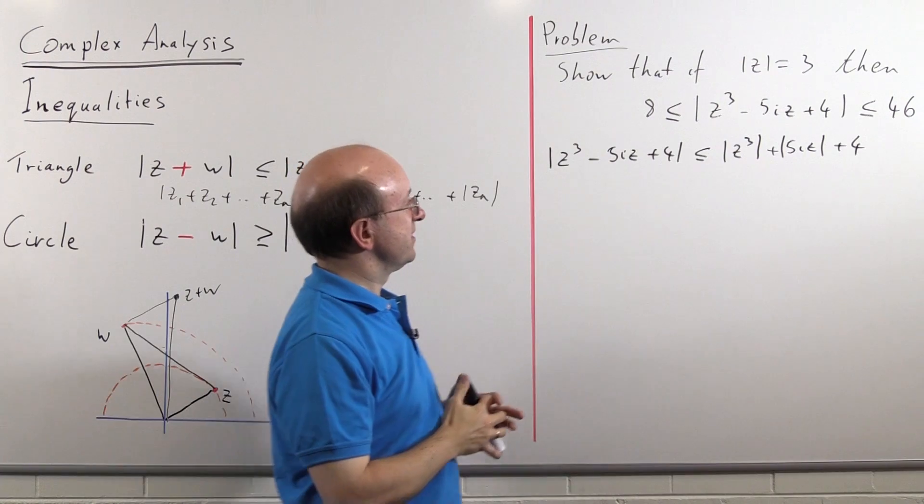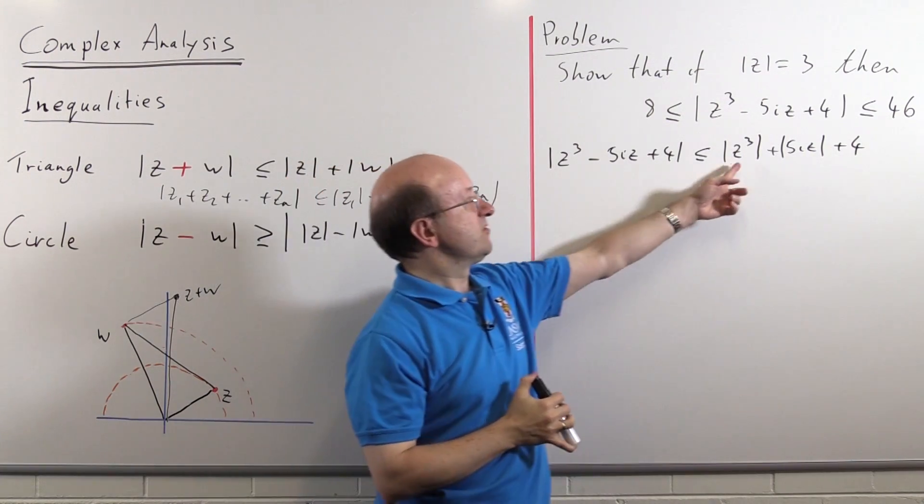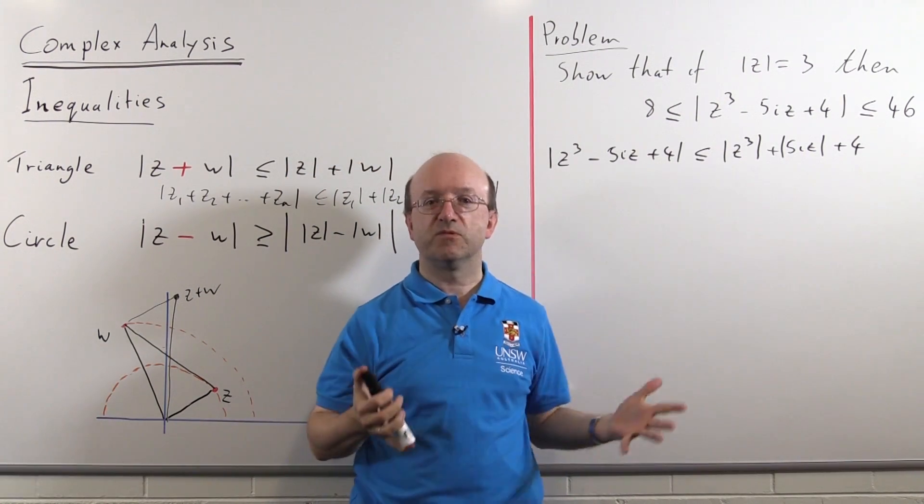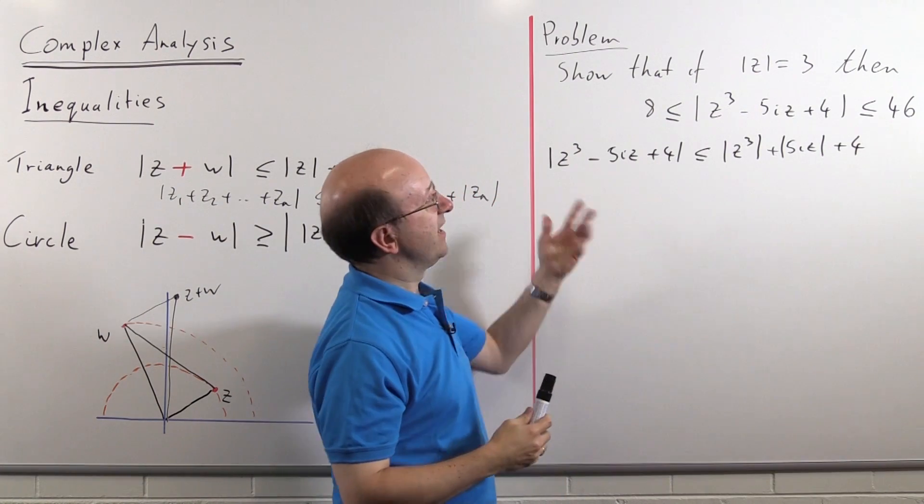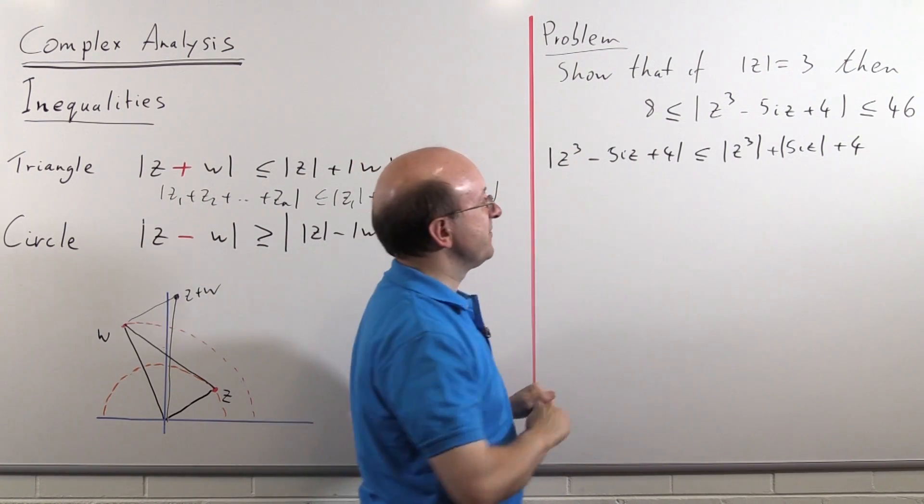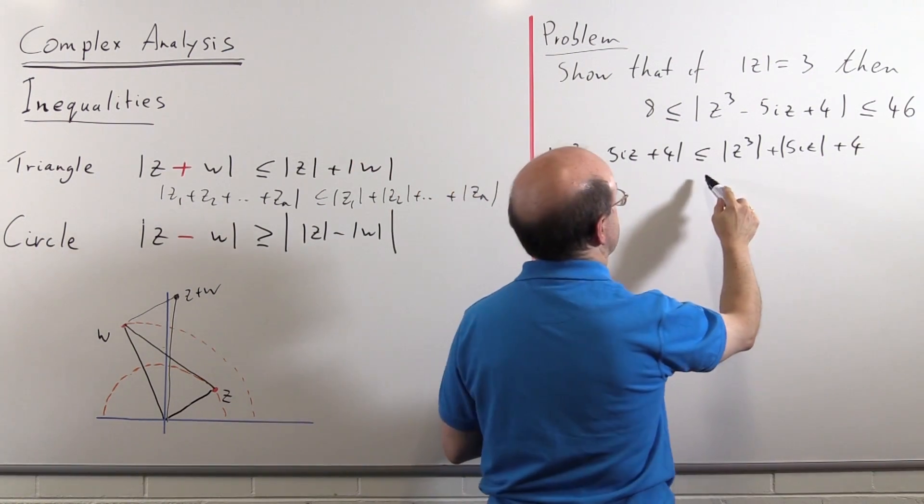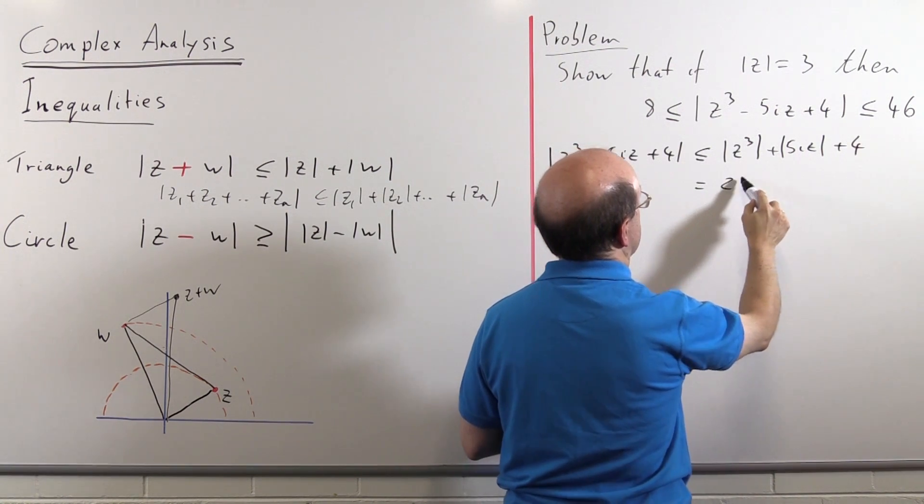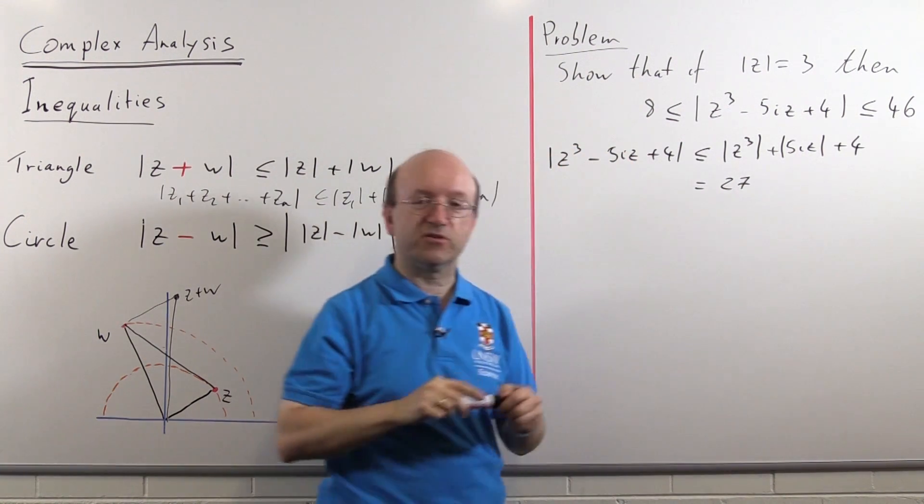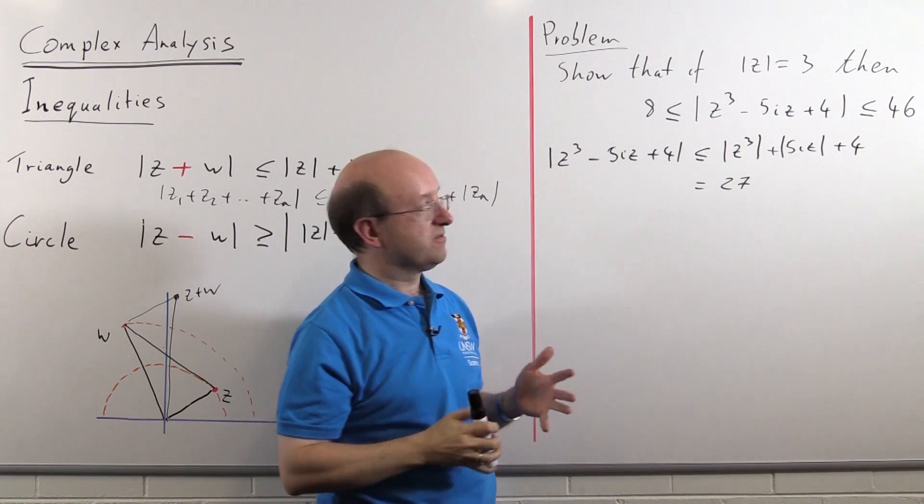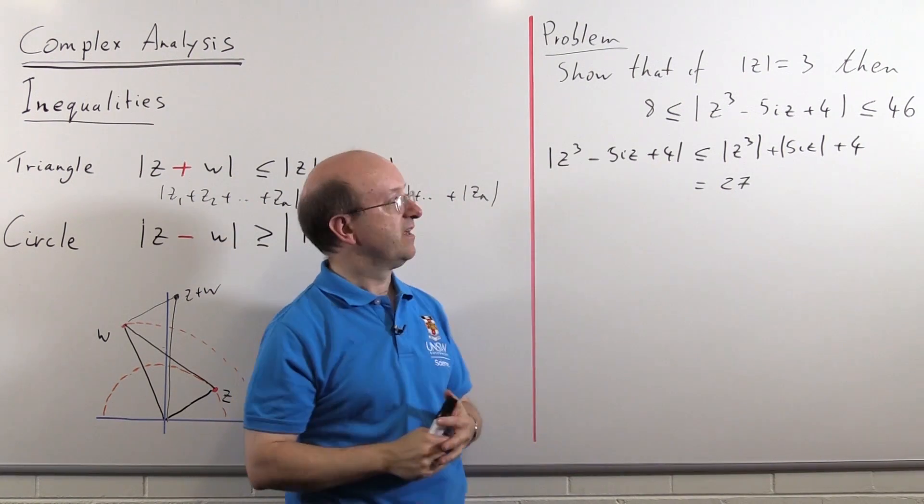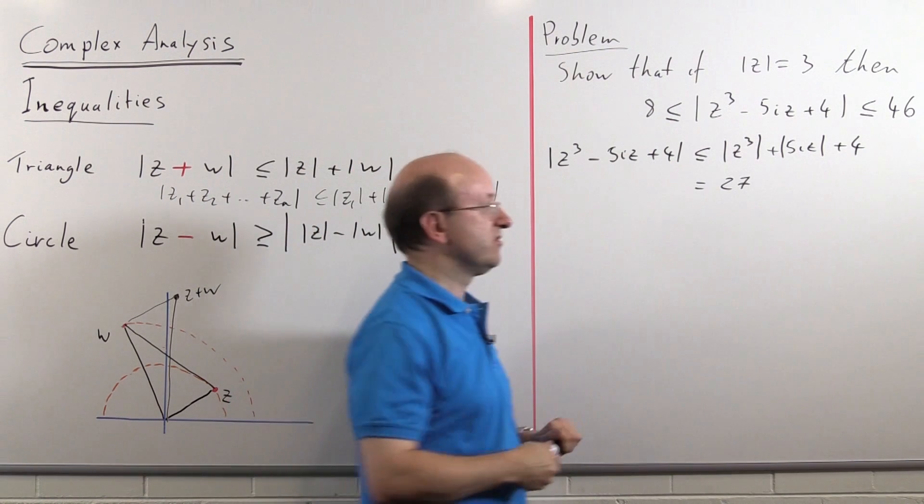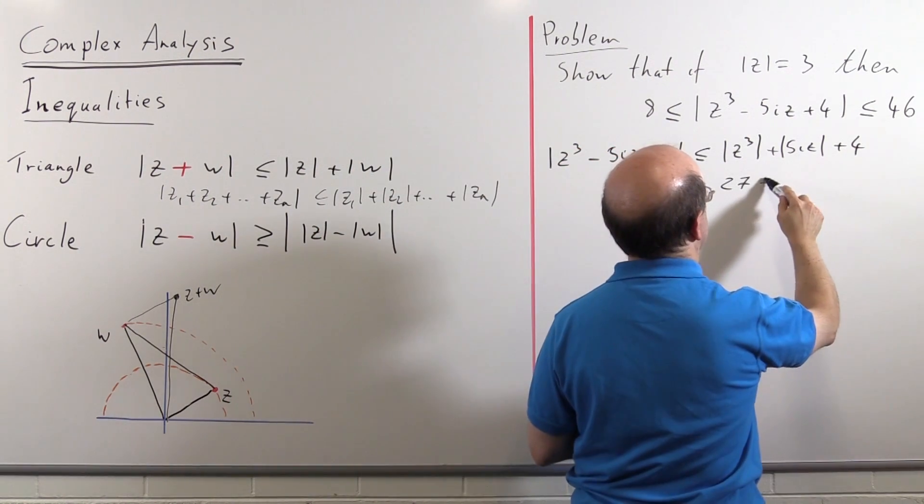Now, if you remember from your first course in complex numbers, the modulus of z cubed is just the modulus of z all cubed, and we're fixed on mod z equals 3, so this is 27, the first term, 3 cubed. The modulus of 5i z is 5 times the modulus of i, which is just 1, times the modulus of z, which is 3 of course, so this term here is,